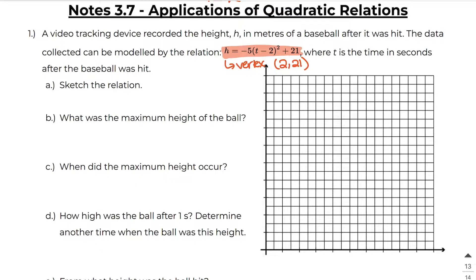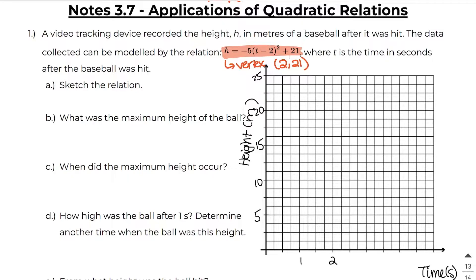We know that t is the time in seconds, so that's going to go on the x-axis. And h is the height in meters, so that's going to go on the y-axis. The highest it's going to reach is 21 meters. I'll mark 5, 10, 15, 20, and 25 on the vertical axis, and 1 through 5 on the time axis. Question A says to sketch the relation.